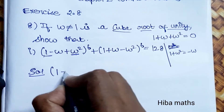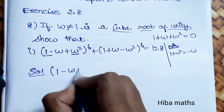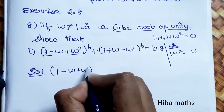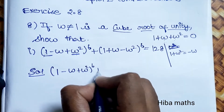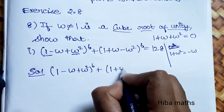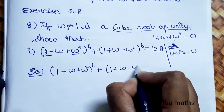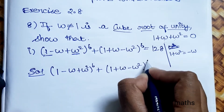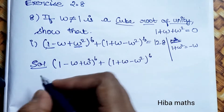The solution is: (1 - ω + ω²)^6 + (1 + ω - ω²)^6.